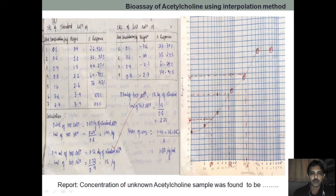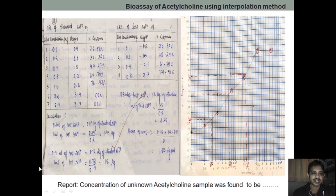Similarly, 0.4 ml gives 61%, and by interpolating we get 0.72 micrograms. The last one is 0.8 ml, which gives 79%, and for that we are getting 1.8 micrograms. So if 0.4 ml is 0.72 microgram of standard, then 1 ml contains 1.8 micrograms. For 0.8 ml of test, if it is 1.8 micrograms of standard, then 1 ml contains 2.25 micrograms.